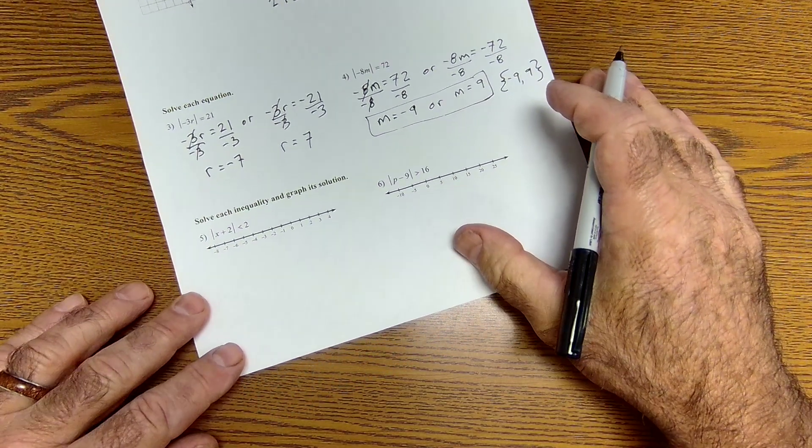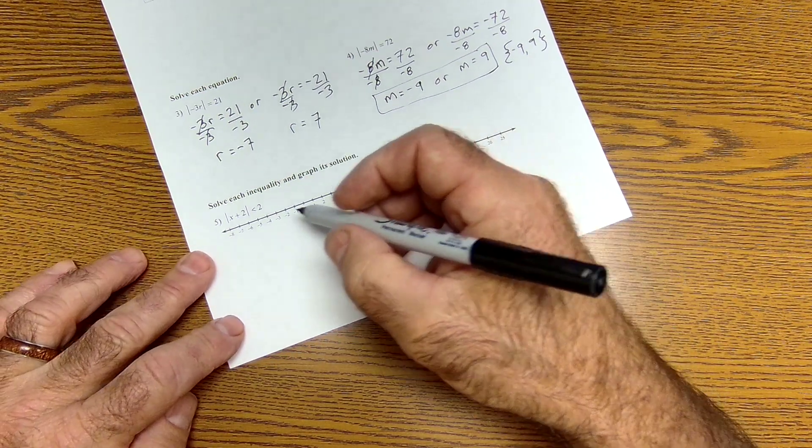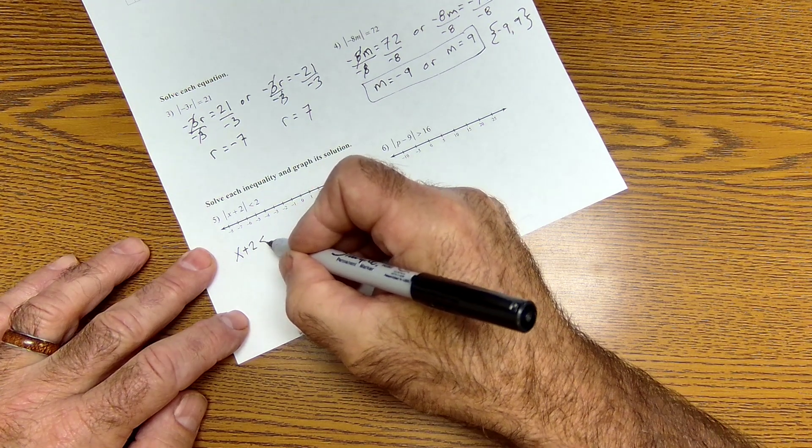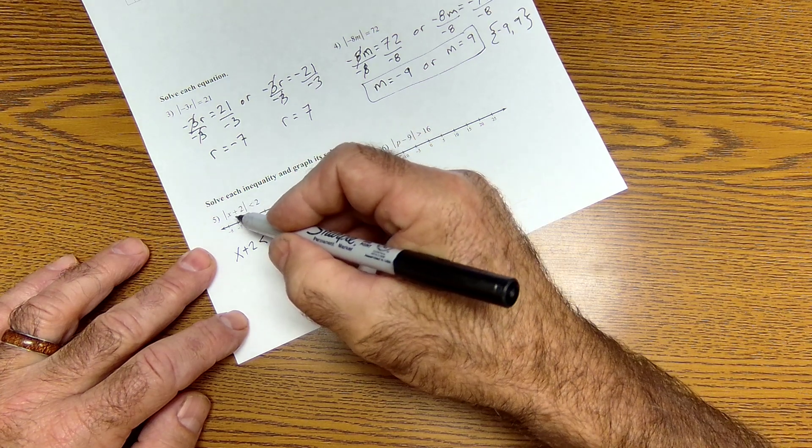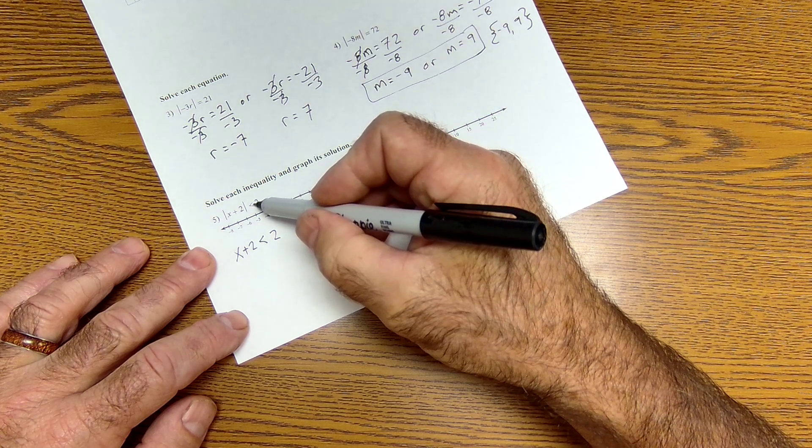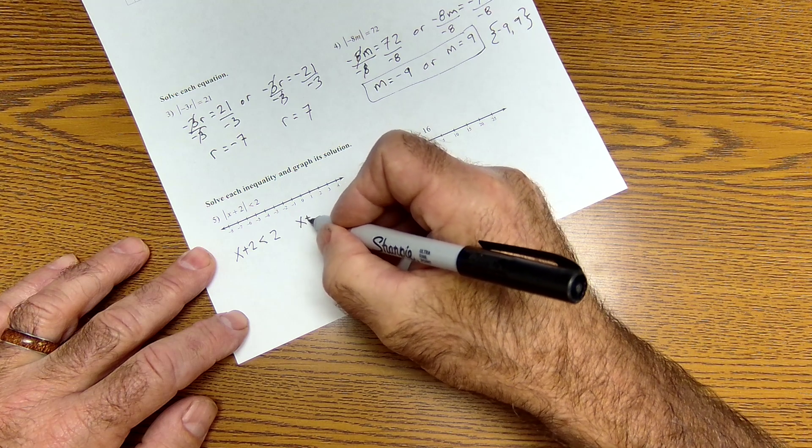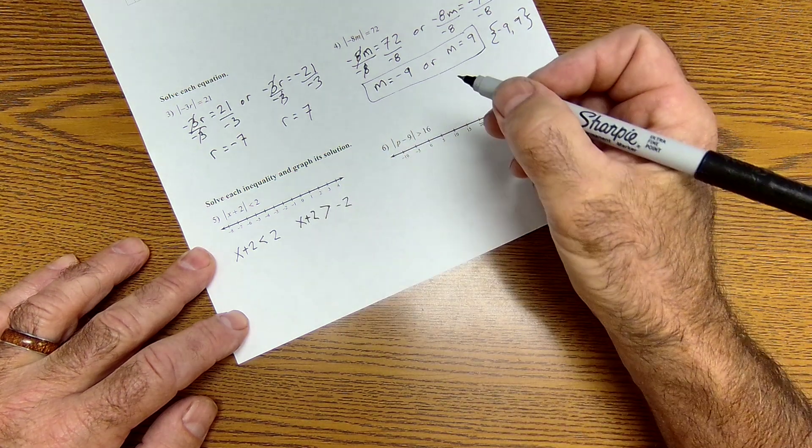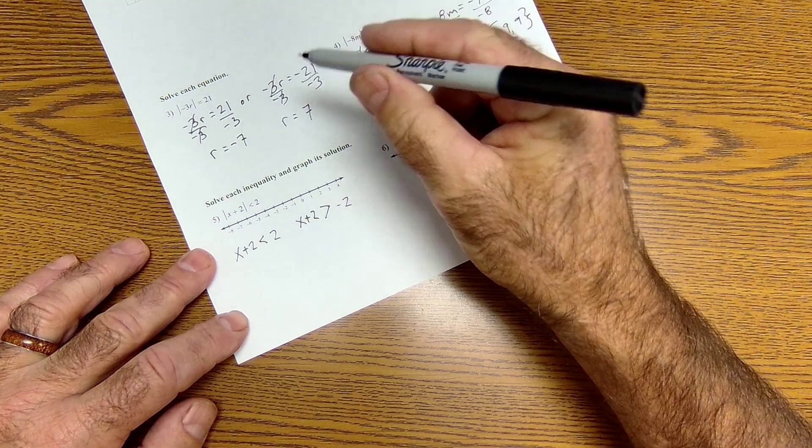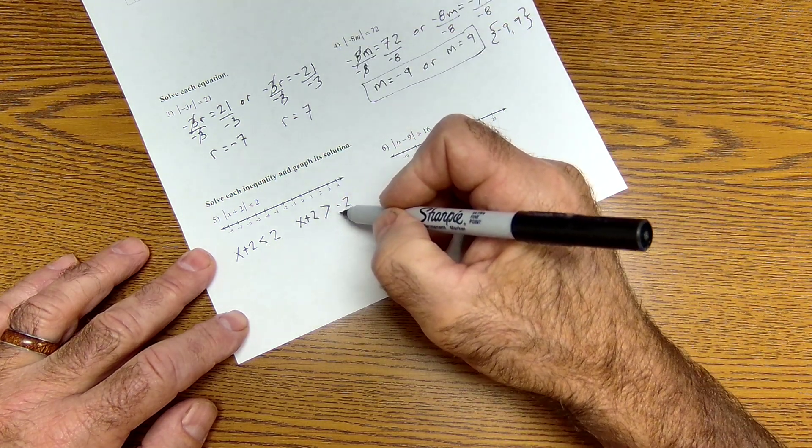Now our third skill with absolute value is graphing. And there's a lot of little pieces here. These are a little trickier. But what I'm saying is, this right here, x plus 2, could be less than 2. Or everything in there could be negative. So I'm going to set up a negative. But for it to be a negative, that means I've got to reverse that sign because I'm really dividing by a negative. So here I'm going to have x plus 2 is now greater than negative 2.